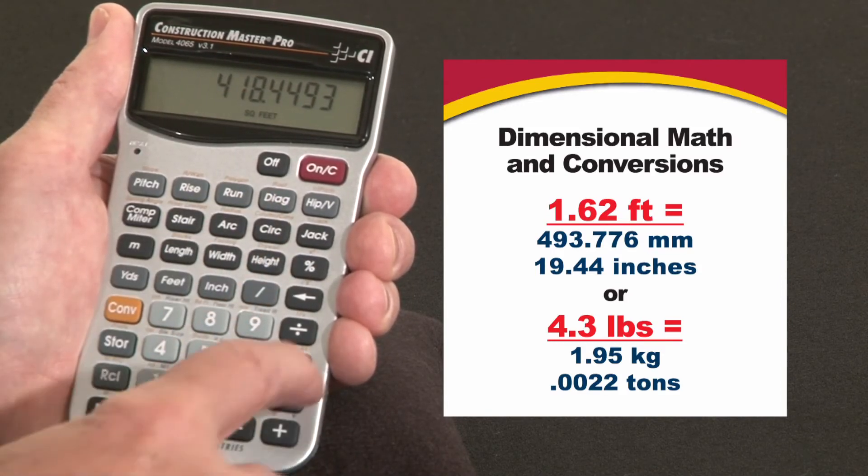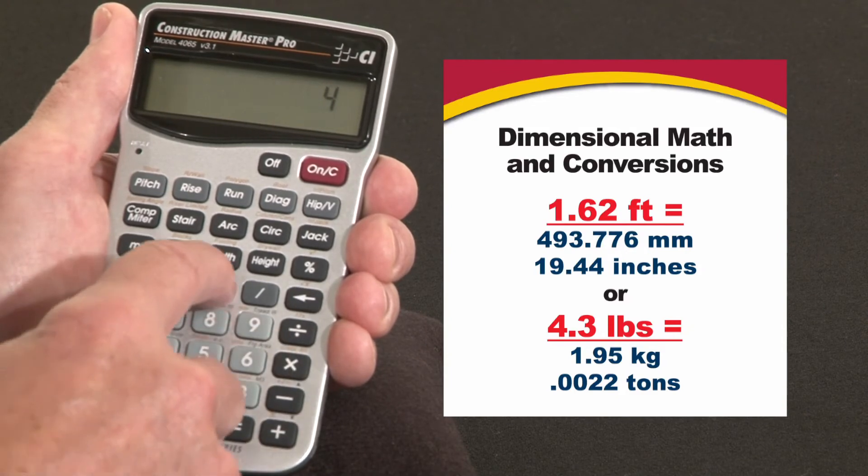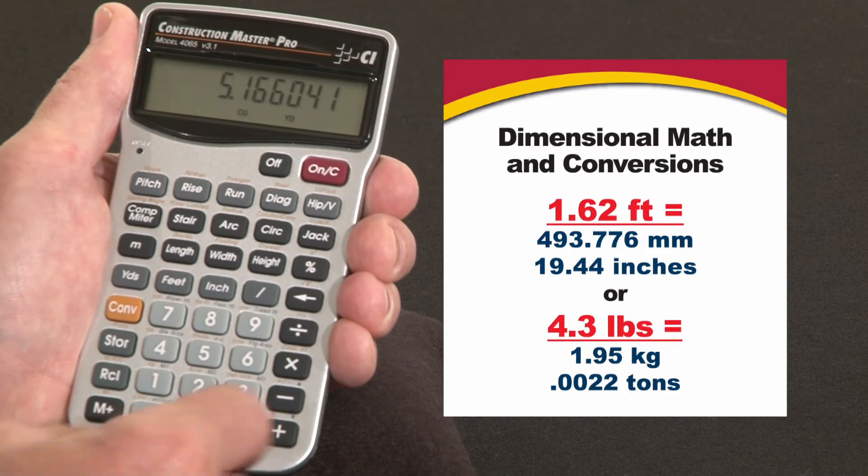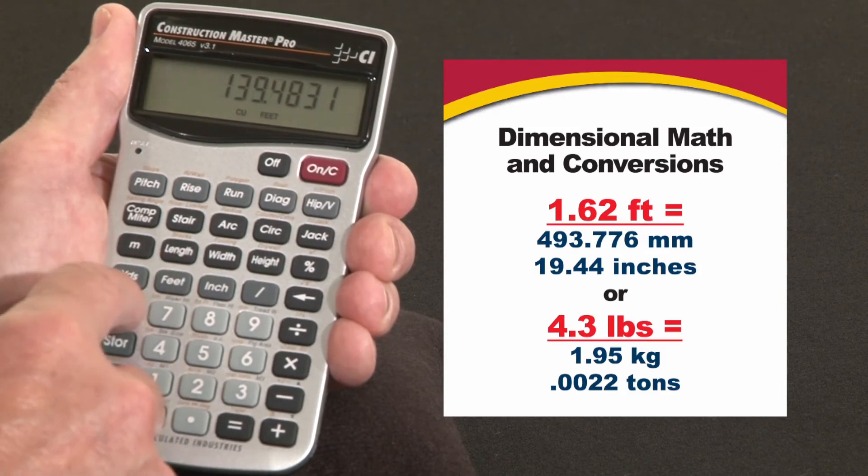Now let's say we're going to pour that four inches deep. By four inches equals five point one six cubic yards. You can make the same conversions there to cubic feet or cubic meters.